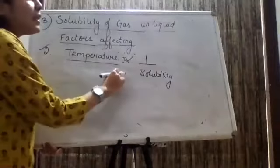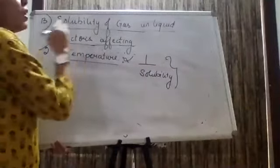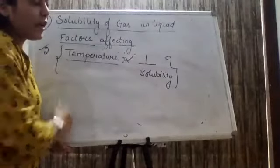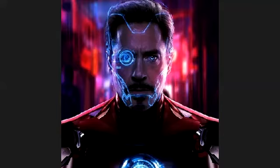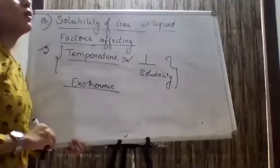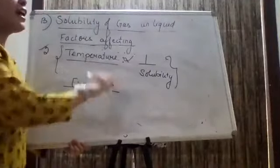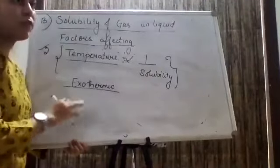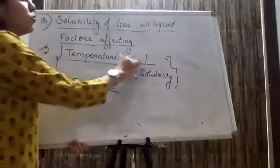What can we conclude from this? Whenever we are dissolving a gas in liquid, heat is released — the reaction is exothermic. Hence with increasing temperature, solubility decreases. The second point for gas in liquid is pressure. Whenever we increase the pressure, solubility will increase.